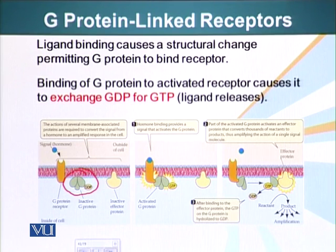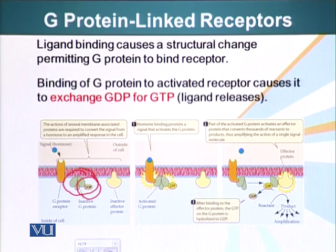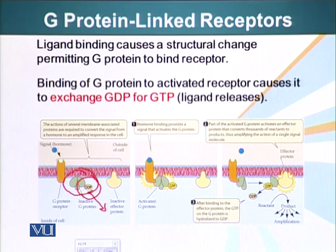This binding causes a change in the G-protein. G-protein is called G-protein because it is attached to a GTP or a GDP. In its inactive state, the G-protein is bound to GDP. Once the receptor is activated, the G-protein interacts with the receptor, causing it to get rid of its GDP. Since the concentration of GTP is several folds greater than GDP, the protein will likely bind a GTP, and when that happens, the G-protein is now activated.